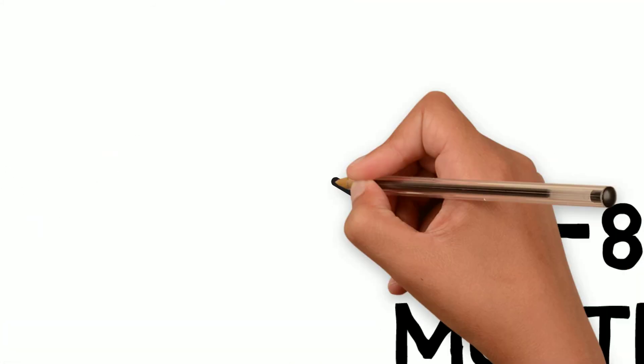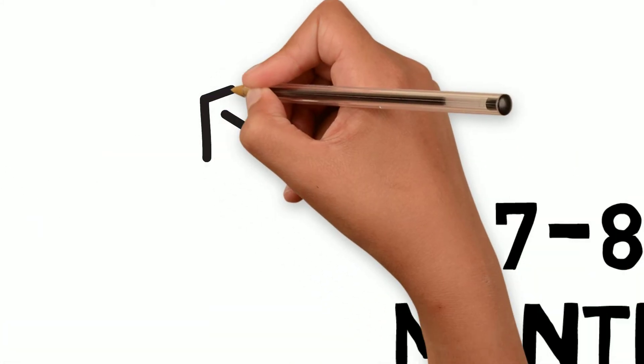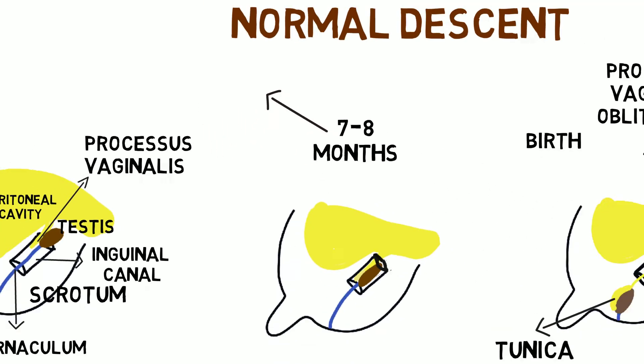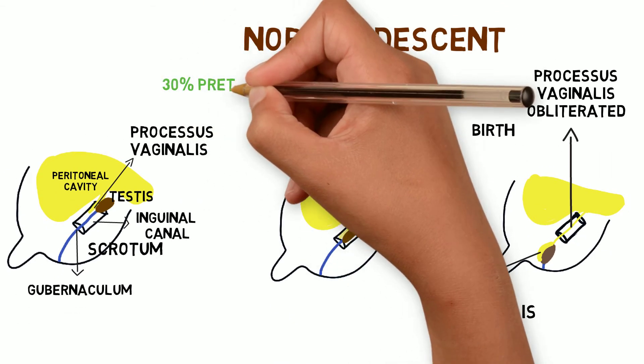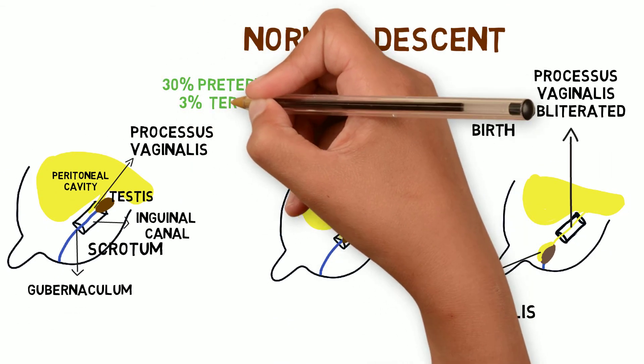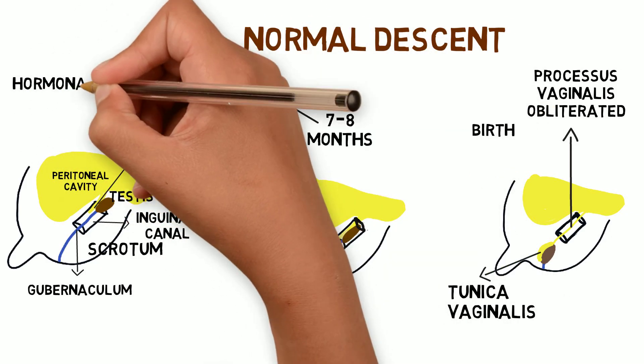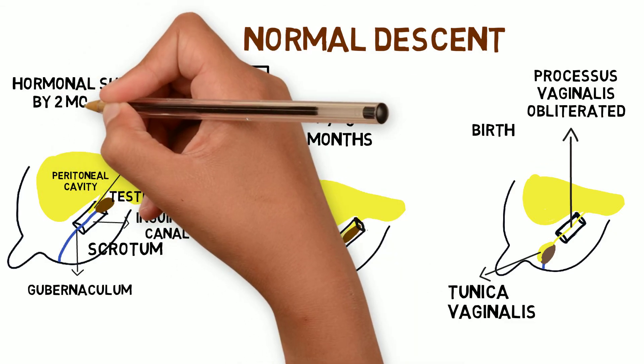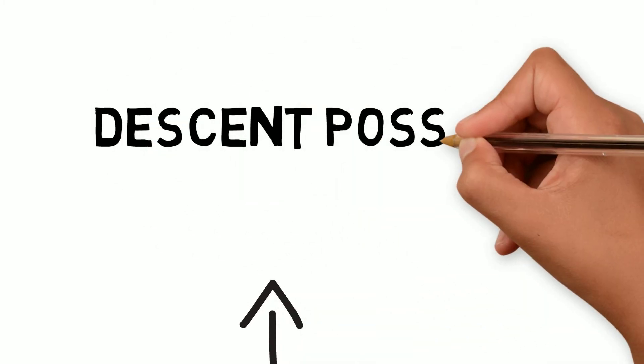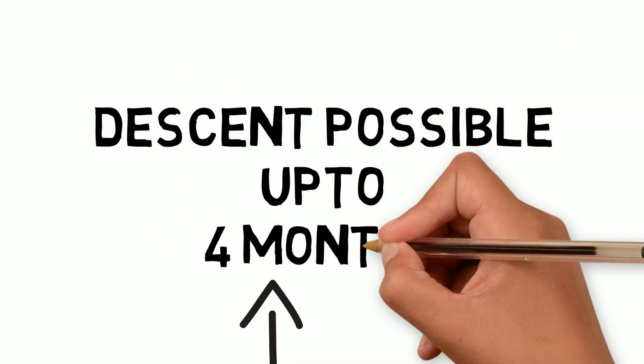Because the testis begins its descent by 7-8 months of intrauterine life, the incidence is more common in preterm babies, about 30%, and only 3% in term babies. After birth, by 2 months of age, there is testosterone surge. This causes some amount of descent, so descent is possible till 4 months of age but not after that.